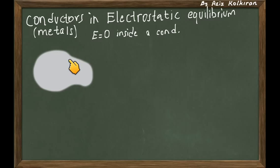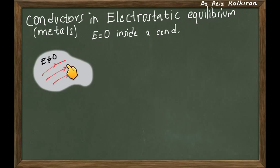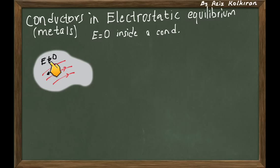We have this conductor, and this gray region is the volume of the conductor. Consider the counterintuitive argument that the electric field is not equal to zero. Imagine if inside the conductor the electric field is not equal to zero — we have, for example, electric field lines. The property of conductors, which is why we call them conductors, is that there are free charges moving inside. So if the electric field is not equal to zero, then the free electrons inside the conductor, because of this non-zero electric field, will move. If there is a non-zero electric field, then some of the electrons that see this non-zero electric field will move.